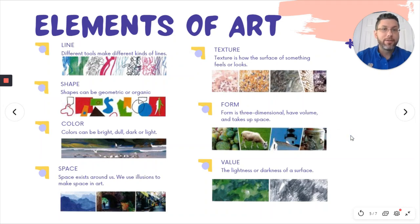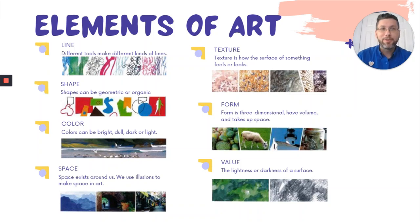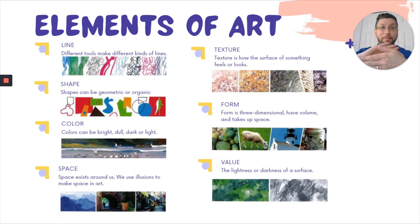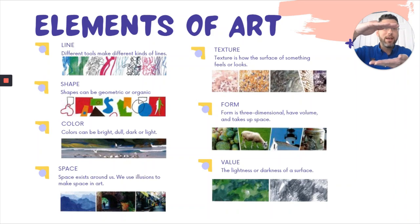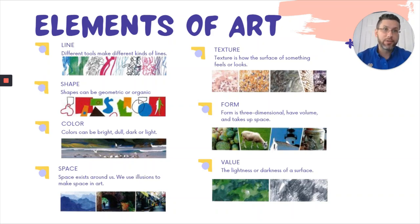Form is an element of art — it's a three-dimensional object that has volume and takes up space. Sometimes we get shape and form mixed up. A cube is like a flat square made three-dimensional. A cylinder has a circle on the bottom and top, and the height in between makes it three-dimensional. Form is three-dimensional. Value is the lightness or darkness of a surface — dark areas have a dark value, lighter areas have a light value, shadows are dark values, and highlights are light values.